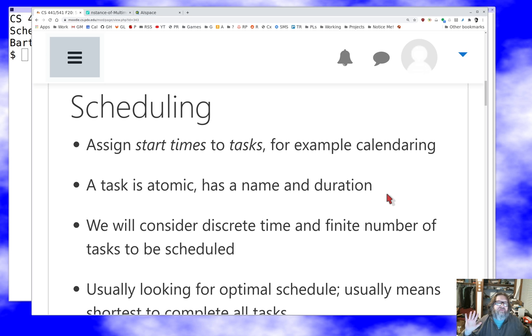And we're going to make more simplifying assumptions today. We're going to consider that the time is divided up discreetly. You can't choose a rational number as the start time. You have to pick an integer, and we'll limit the number of tasks to be scheduled to a finite number, which doesn't sound like much of a limitation, but it's something you have to say out loud.